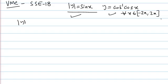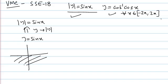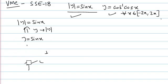The graph of mod y equal to sin x can be drawn from the graph of y equal to sin x by replacing y by mod y. When we replace y by mod y, we reject the lower half — whatever graph we have below the x-axis, we remove that — and we take the reflection of the upper half into the lower half.